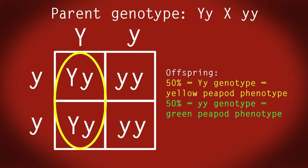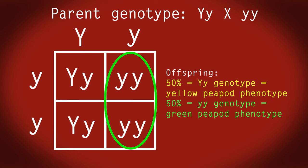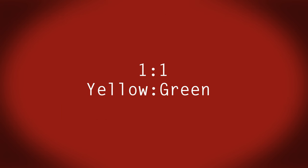We have two Yy genotypes, which means 50% of these offspring would have the dominant yellow pea pods. And we have two yy genotypes. So 50% of these offspring would have the recessive green pea pods. We could write this as 1 to 1 yellow green phenotypic ratio.